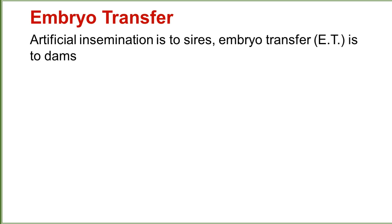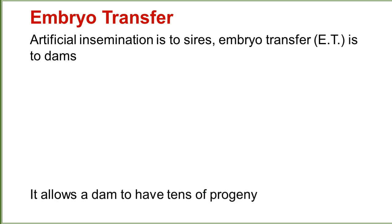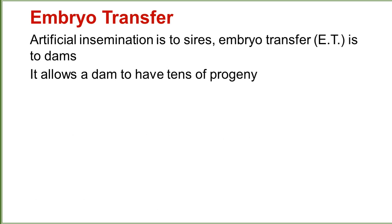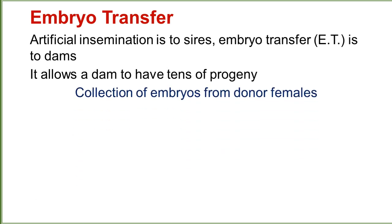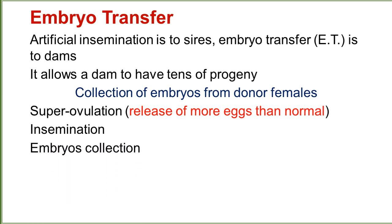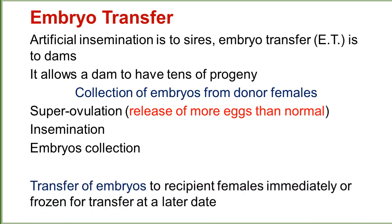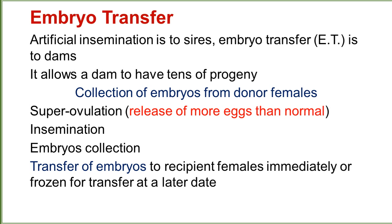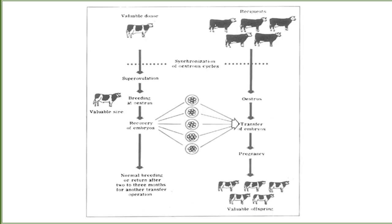Embryo transfer allows a dam to have tens of progeny. It involves collection of embryos from donor females through super ovulation, which means release of more eggs than normal. The steps of embryo transfer involve insemination, then embryo collection, followed by transfer of the embryo.